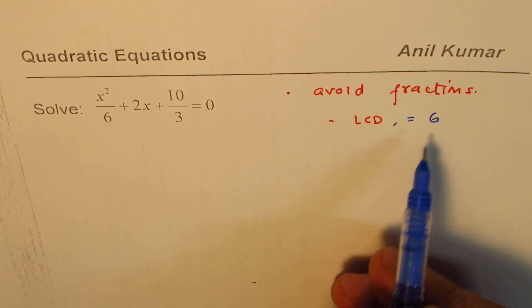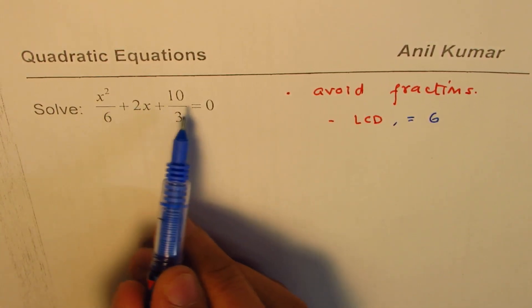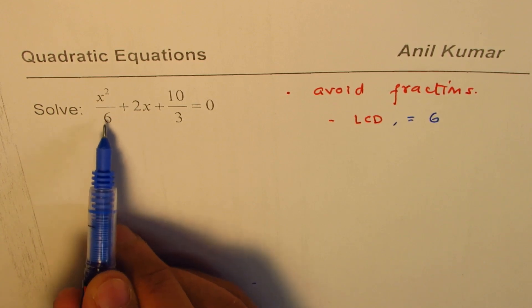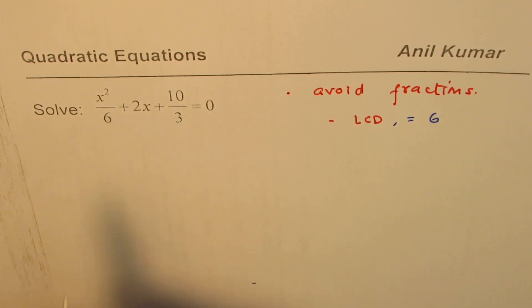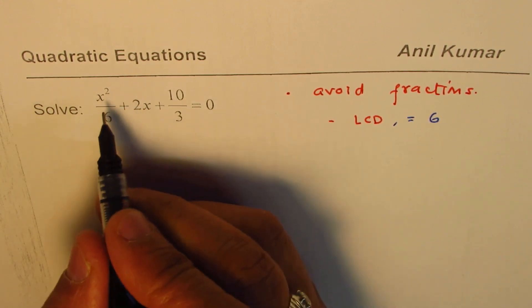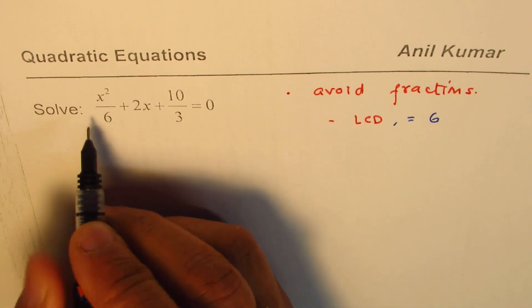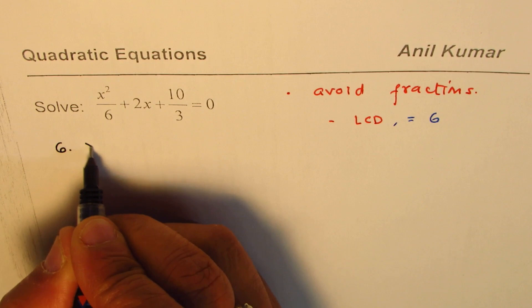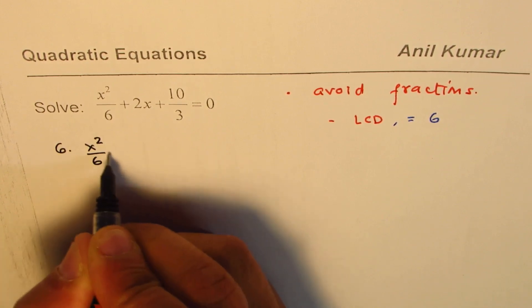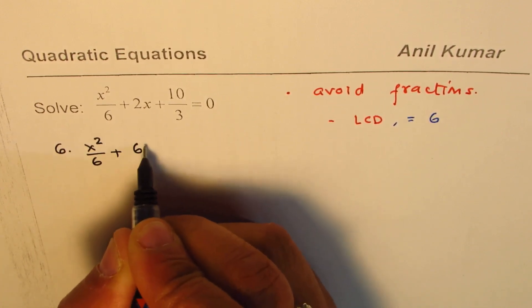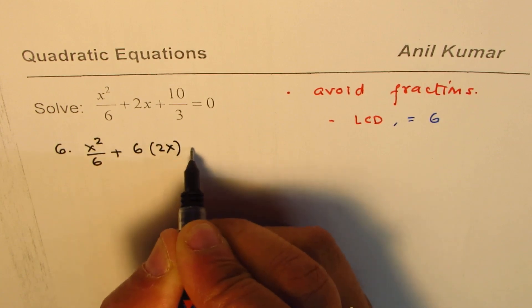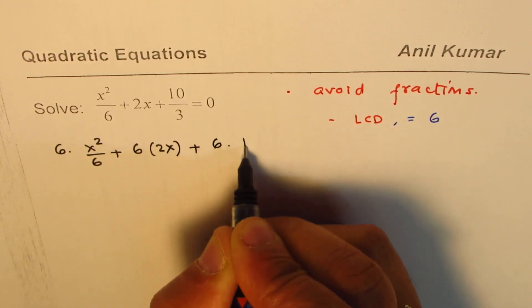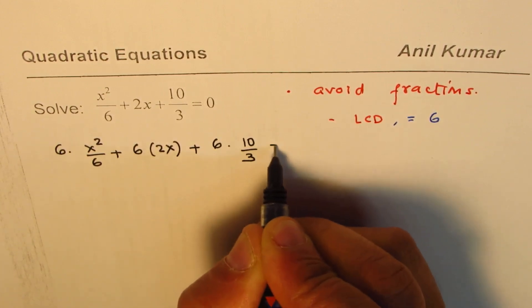When lowest common denominator is 6, we can multiply each term by 6, thereby cancelling the denominator part and then getting a new equation to solve, which is equivalent to the previous equation. So we write down the equivalent equation, multiplying each term by 6. We have 6 times x squared over 6 plus 6 times 2x plus 6 times 10 over 3 equal to 0.